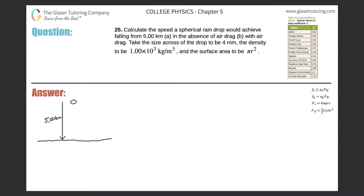Number 25: calculate the speed a spherical raindrop would achieve falling from five kilometers. Letter (a): in the absence of air drag. The distance is in kilometers, so we need to convert — moving the decimal three places to the right gives us 5,000 meters.